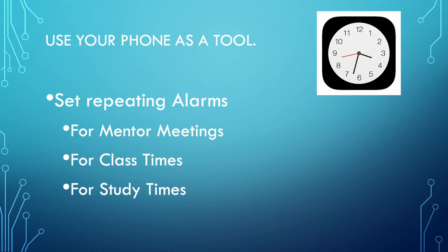I use my phone as a tool all the time to make sure that I am on time. I'm a working mother and I need repeating alarms, so I suggest that you set repeating alarms for your mentor meetings with Adam, for class time. Sometimes we're racing out of work trying to get home and logged into class on time and can easily get sidetracked, so set that alarm to go off five minutes before class so you have time to get in. If you find that you're a procrastinator and need reminders to get to studying, go ahead and set up alarms for some study times.